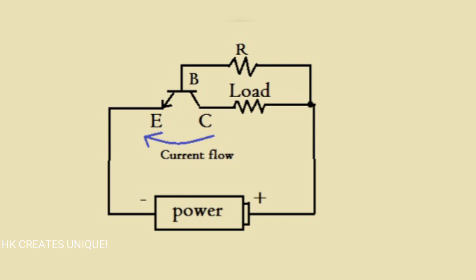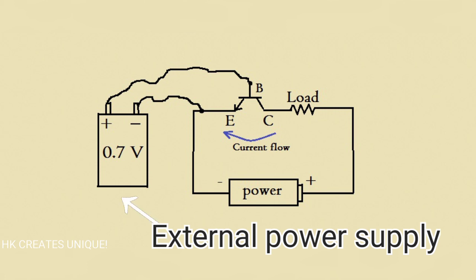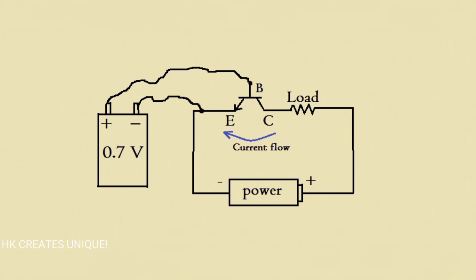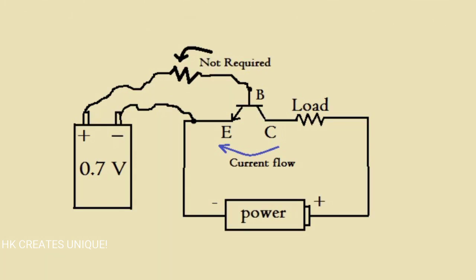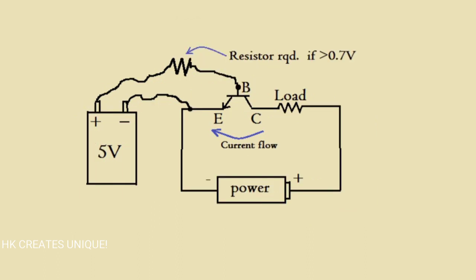Now, instead of giving voltage directly from the power supply, we can also give voltage from an external power source to act like a closed key. Also note that the base should always be positive with respect to emitter in case of NPN type transistor. If this external power supply has around 0.7 volts, there is no need of a resistor, but if it has more than 0.7 volts, you need to use a resistor.